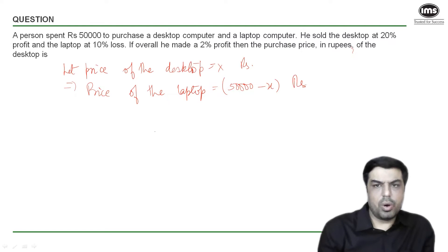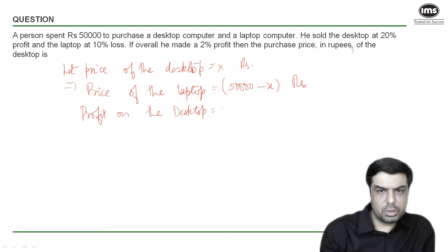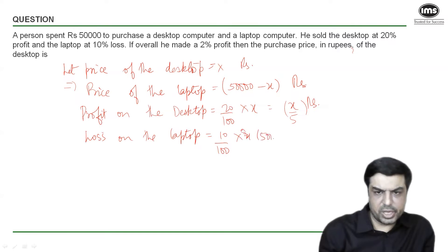Now on the desktop he has made a 20% profit. Let's calculate that profit. The profit on the desktop is 20% of x rupees, which is x by 5. On the laptop he made a 10% loss. The loss on the laptop is 10% of 50,000 minus x, so that is (50,000 minus x) by 10.